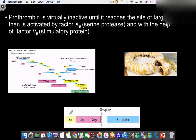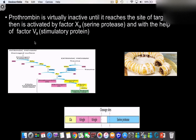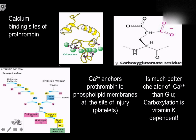Prothrombin in its proenzyme form has a gla domain, which is important for calcium binding, and two kringle domains, which are structural domains. The proenzymes are not just created for the sake of regulation — they have functional domains in the proenzyme form. The gla domain's importance is for calcium binding, and the reason calcium is really important is that it will form a precipitate with anything anionic very quickly.